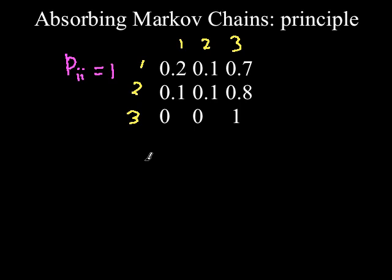Absorbing states that signify an absorbing Markov chain have to have the same row number and column number, for example, 1,1, 2,2, 3,3, and so on, in the form ii. This is what the p sub ii refers to.